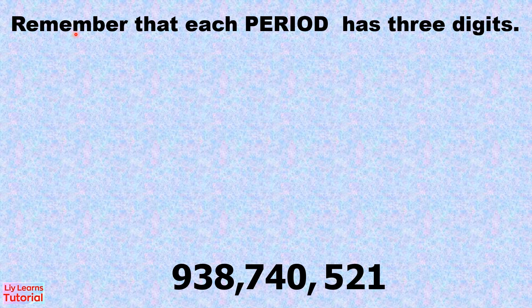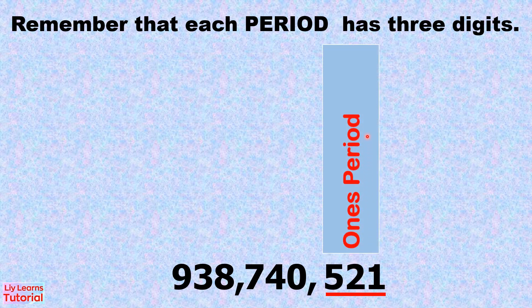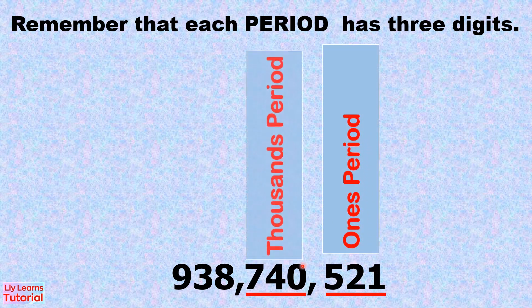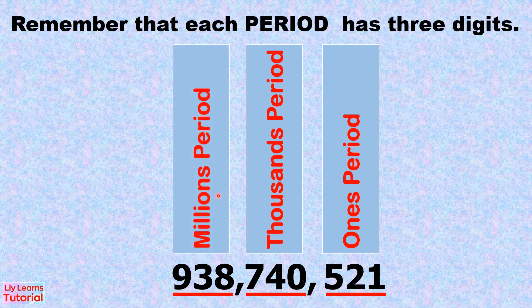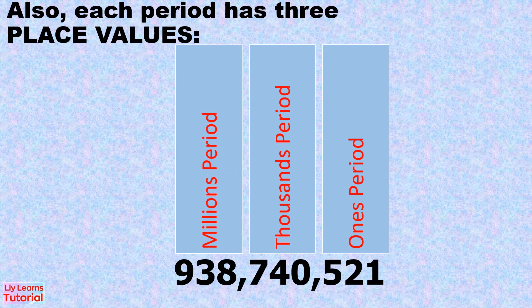Remember that each period has three digits: ones period, thousands period, and millions period. Also, each period has three place values.